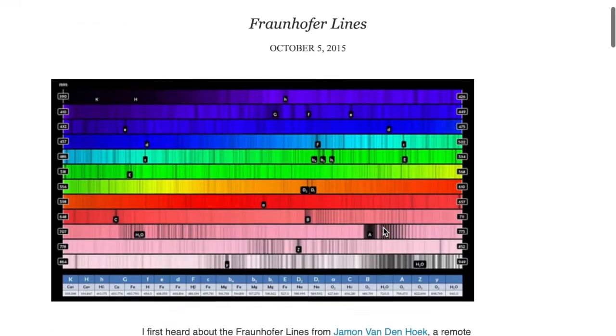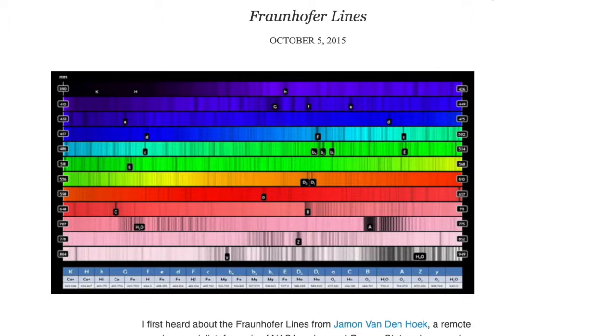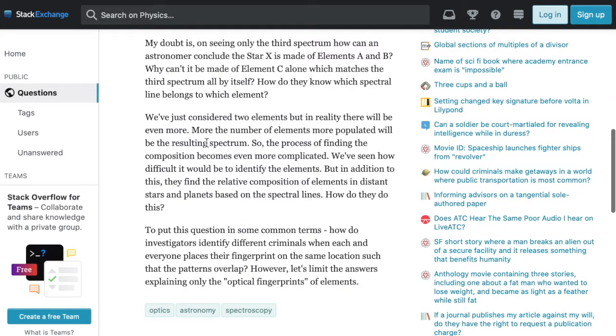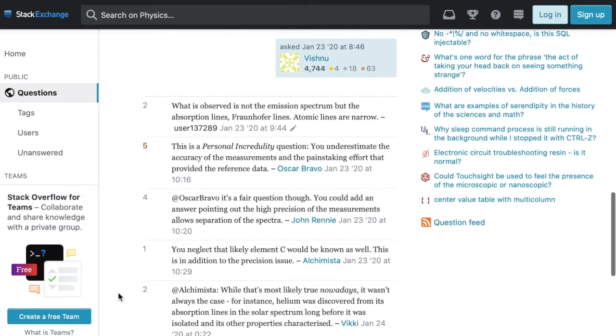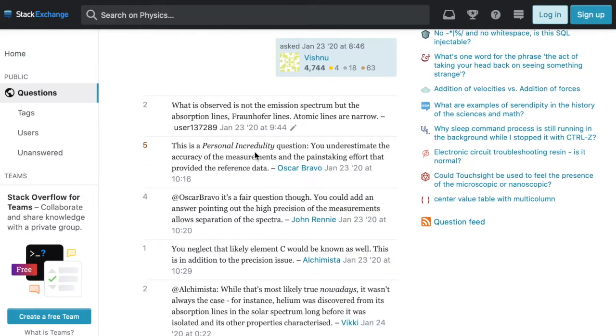You telling me they know that for sure? We've considered just two elements, but in reality there will be even more. So the process of finding the composition becomes even more complicated. We've seen how difficult it would be to identify the elements. But in addition to this, they find the relative composition of elements in distant stars and planets based on spectral lines. How do they do this? To put this question in some common terms, how do investigators identify different criminals when each and everyone places their fingerprint on the same location such that the patterns overlap? I think that's a good question and a good analogy too. Let's see what some of these questions answers are. These answers, none of these answers are any good. You can check them out for yourself like this one. There's a personal incredulity question. Yes, you don't believe it. It's not incredible. You underestimate the accuracy of the measurements and the painstaking effort that provided the reference data. I think you're overestimating them, and I'll show you why.